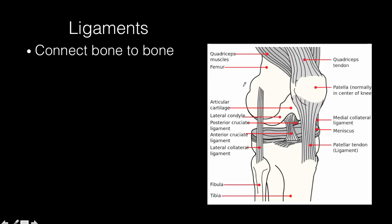Ligaments look very much like tendons, but their job is to connect bone to bone. Here we have a knee — up here is the femur and down here is the tibia, and inside are ligaments. This one is the ACL, or anterior cruciate ligament, and in the back is the PCL, or posterior cruciate ligament. Their job is to connect the tibia to the femur. There are also ligaments on the side, like the medial collateral ligament, and they help hold the joint together.